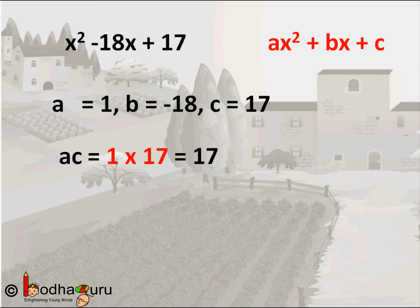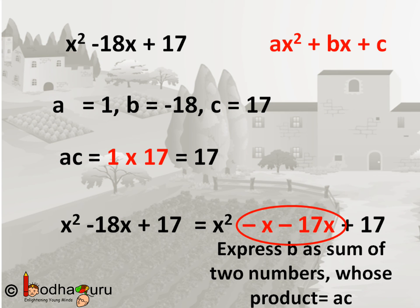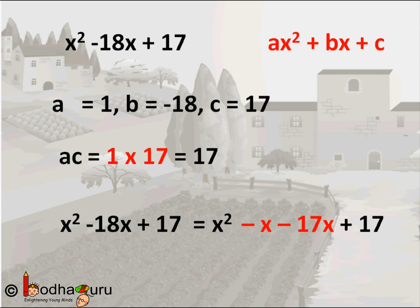So we need to find a combination that gives -18 in addition. Can it be +1 and +17? But +1 + 17 is 18, not -18. Can it be -1 and -17? Yes, -1 and -17 equals -18. So we found it. So we can write b, which is -18, as -1 and -17. So x² - 18x + 17 becomes x² - x - 17x + 17. All we have done is written -18x as -x - 17x. And why did we do that? So that -1 × -17 equals the product of extremes, which is 1 × 17.